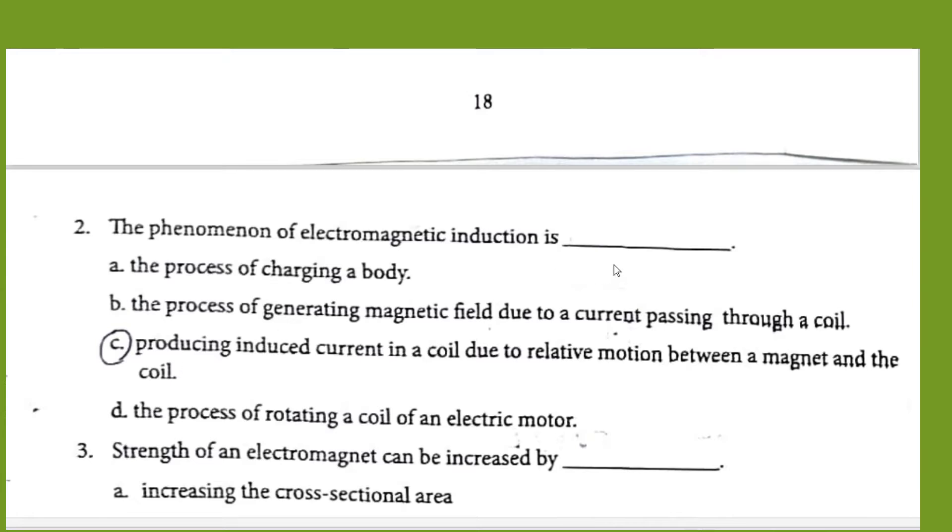The phenomenon of electromagnetic induction is producing induced current in a coil due to relative motion between a magnet and the coil. If there is some relative motion between the magnet and the coil, then only we can get the electromagnetic induction. The other options are not true.